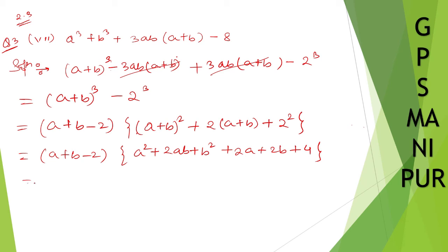Now, (a+b) - 2, a² + b² + 2a + 2b + 2ab + 4.